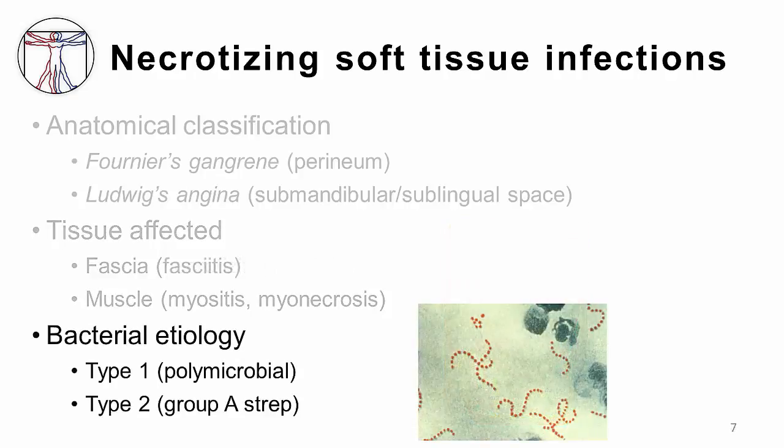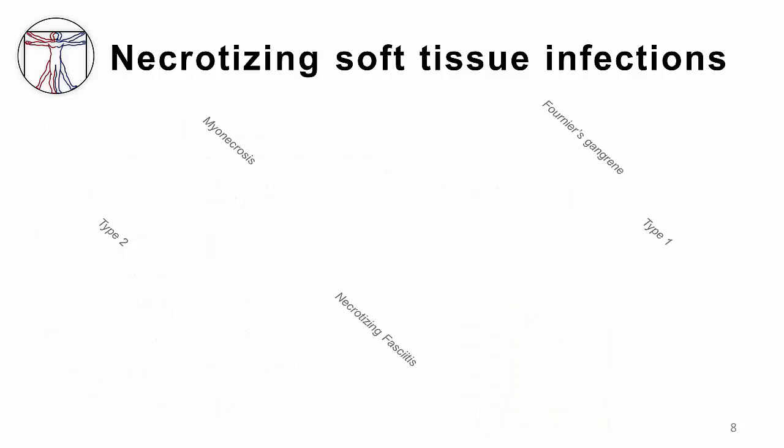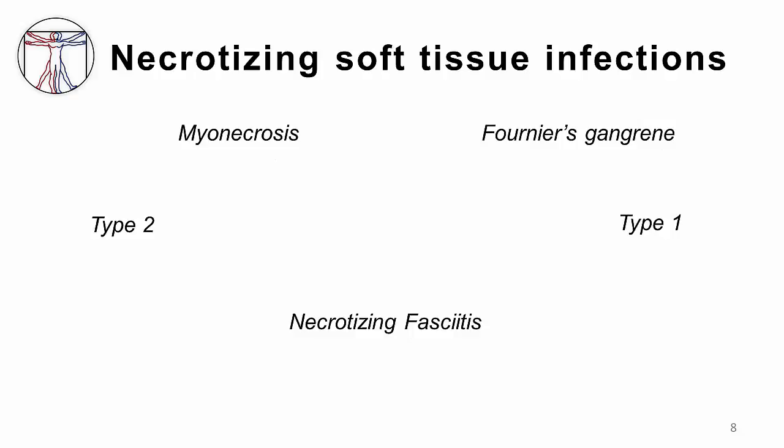Type 1 versus type 2 necrotizing infections refers to classification based on the microbial cause, separating group A strep from other infectious agents. This terminology is generally used when talking about necrotizing fasciitis as opposed to muscular infections. Although these descriptive terms may be useful and are still used in the hospital and in the medical literature, they cause much confusion. One recently proposed recommendation suggested that the term necrotizing soft tissue infection should be used to describe them all, as the treatment is largely the same: early surgery and broad-spectrum antibiotics.